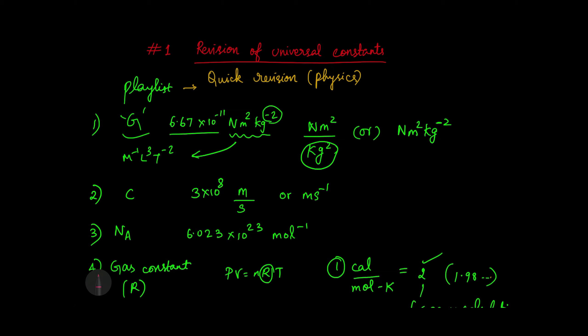Hello friends, welcome to my YouTube channel. In this video I am doing a revision of universal constants — universal gravitational constant, velocity of light, Avogadro number, gas constant. These have fixed values, meaning they are constants. You will need to know their units for dimensional analysis. I will upload this video in a quick revision physics playlist.